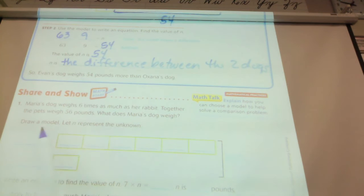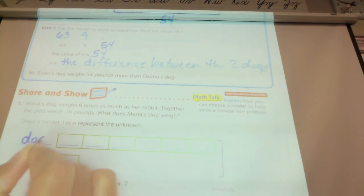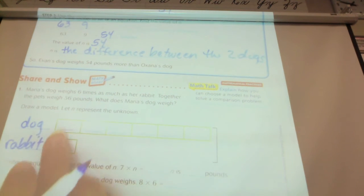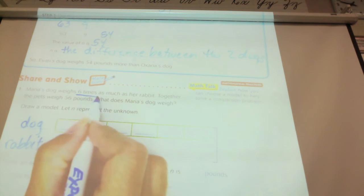The dog. The dog. He weighs six times the amount of the rabbit. So I know that this should be the dog and this should be the rabbit. And if I was making this model on my own, I would know that my top needs to be six boxes because he weighs six times as much.